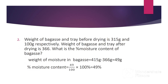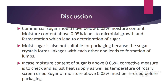So the percent moisture content of the sugar sample is 0.04 percent. Example two: the weight of bagasse and tray before drying is 315 grams and 100 grams respectively. The weight of bagasse and tray after drying is 366 grams. The weight of bagasse plus tray before drying is 315 plus 100, which equals 415 grams. The weight of evaporated moisture is 415 minus 366, which equals 49 grams. Percent moisture content equals 49 grams divided by 100 grams (the weight of the bagasse sample) times 100, which equals 49 percent.